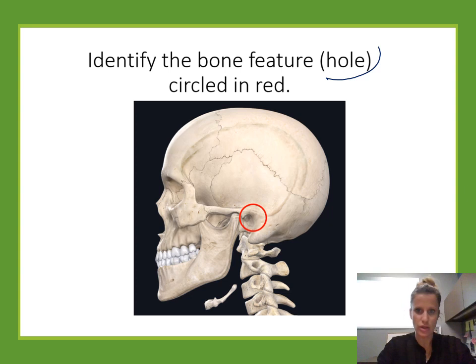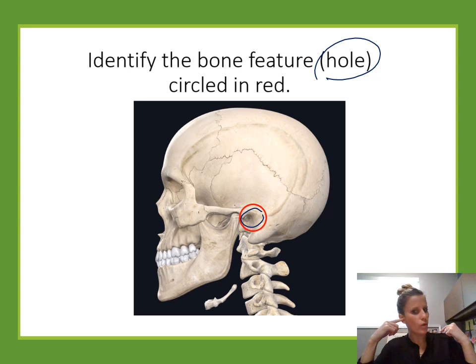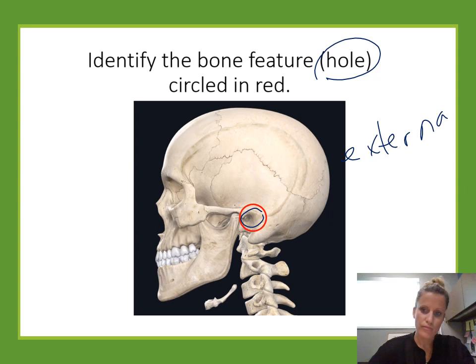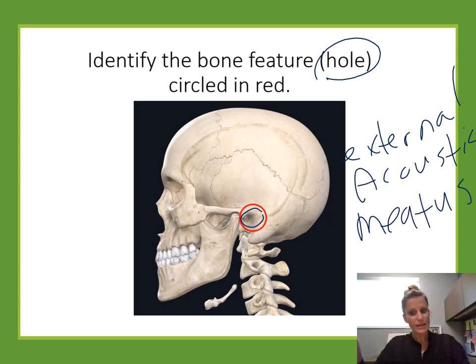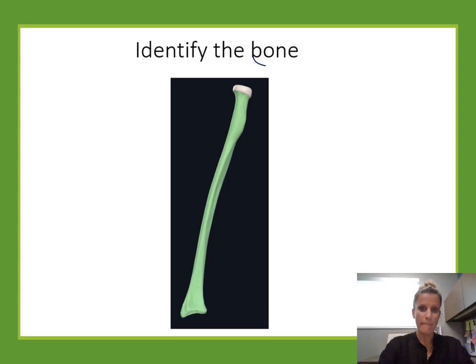Identify the bone feature circled in red. Looking at the side of the skull, there's a hole right where your ear is — that's the hole that allows sound to enter into the middle ear. That's called the external acoustic meatus. 'Acoustic' like sound, 'external' because it connects to the outside.